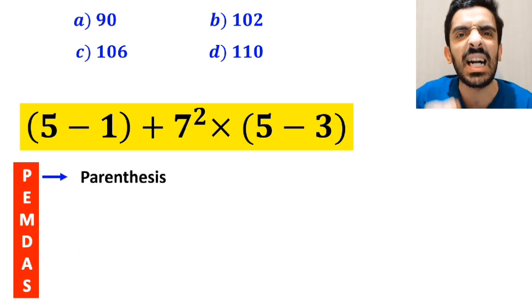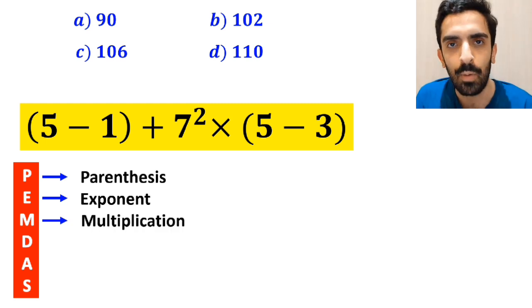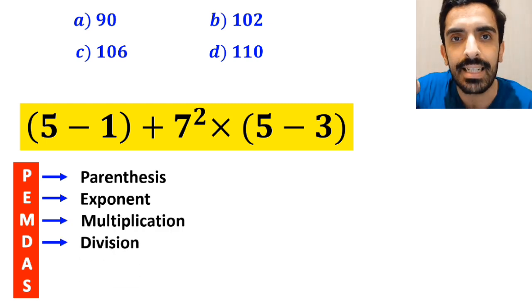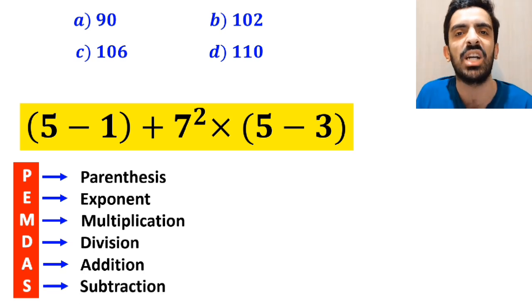And this rule, P stands for parenthesis, E stands for exponent, M stands for multiplication, D stands for division, A stands for addition, and S stands for subtraction.